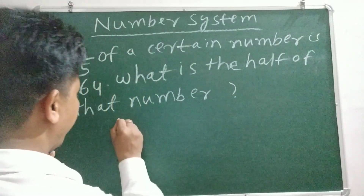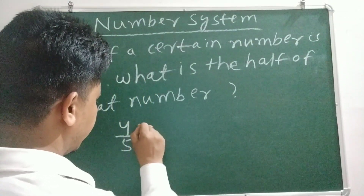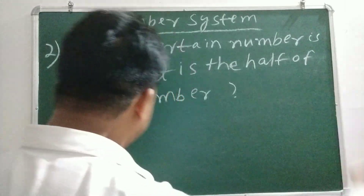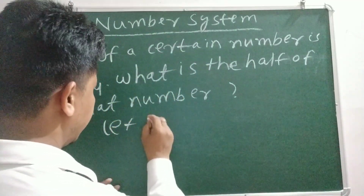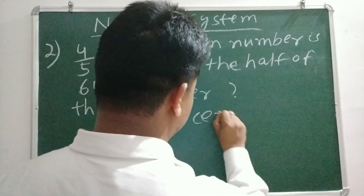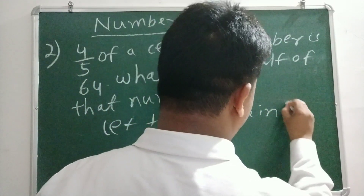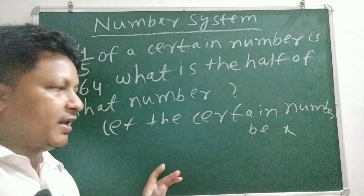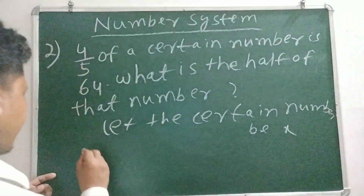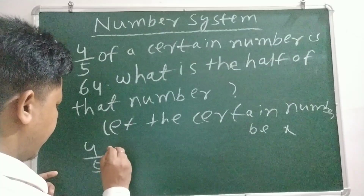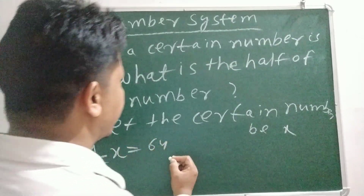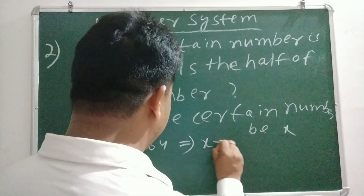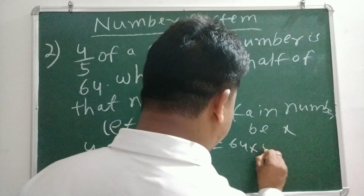Suppose we have 4 by 5. Let the certain number be x. So we have 4 by 5, x is equal to 64. That implies x is equal to 64 into 5 by 4.